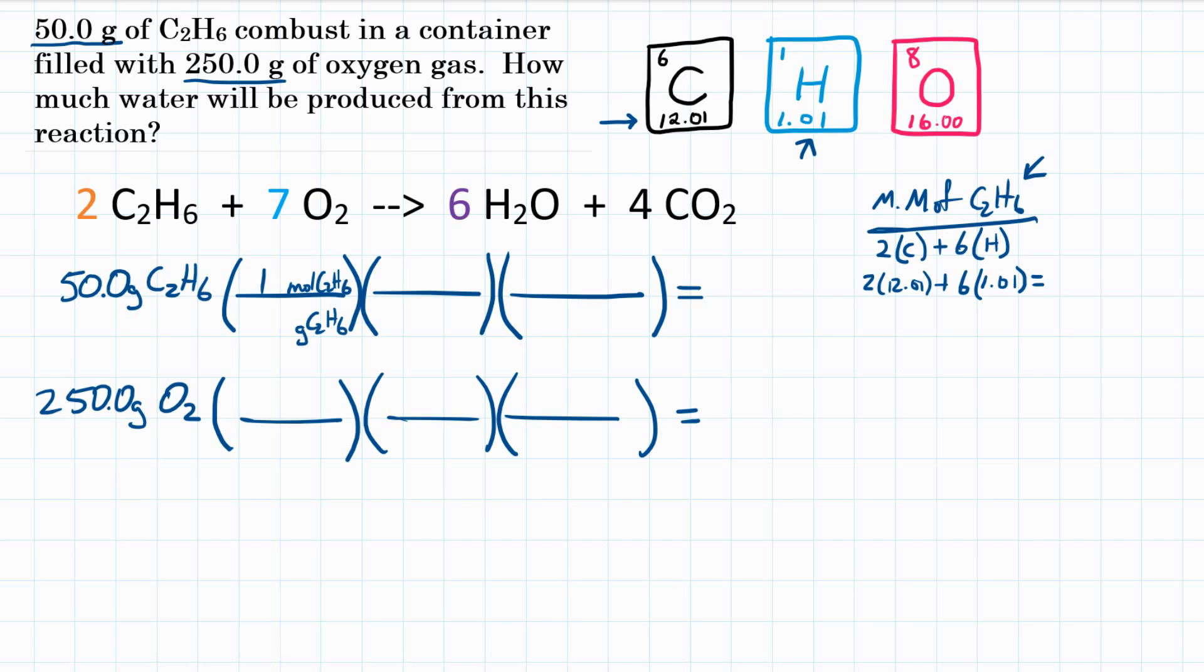Sometimes those are a little different depending on your periodic table. So two times 12.01 plus six times 1.01 gives us a molar mass of 30.08 grams. So that goes on the bottom of our first conversion factor, 30.08 grams. That is the molar mass of C2H6, the mass of one mole. So at this point, we converted our grams of C2H6 to moles. They cancelled out.